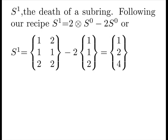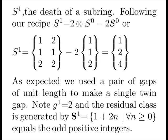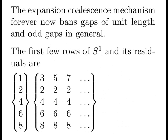Consider S1, the death of a sub-ring. Following our recipe for construction, we expand to the next primordial boundary, subtract our next prime times 2 of our current members, and we get a trivial set. Notice, the average gap is equal to 2, and the residual class generates the odd positive integers. Completely uninformative. The expansion coalescence mechanism forever now bans gaps of unit length and odd gaps in general.